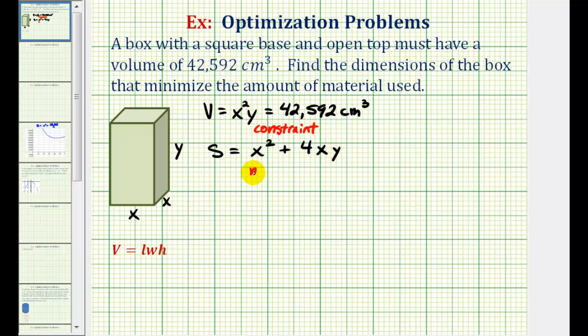This is the equation that we want to minimize. But to do this, we need to write S in terms of one variable, and right now it's written in terms of x and y. So if we solve the constraint for y, we can perform a substitution for y in the surface area formula, and then we'll have S in terms of x.